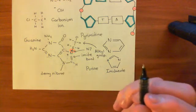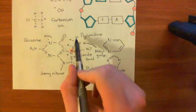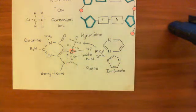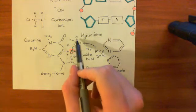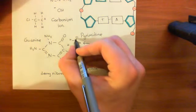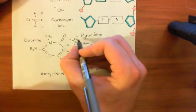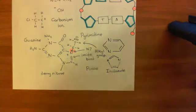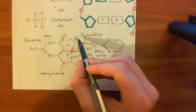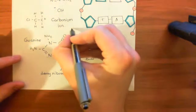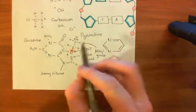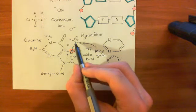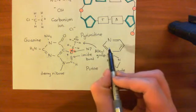It doesn't stop there. What can happen is this chlorine atom on the alkyl group that you've added onto the guanine organic base can fall off. When this bond between the carbon and the chlorine cleaves, the chlorine takes both electrons and becomes a chloride anion, leaving this carbon with a positive charge. Basically, you're going to produce another carbonium ion, which can then bind onto another guanine.